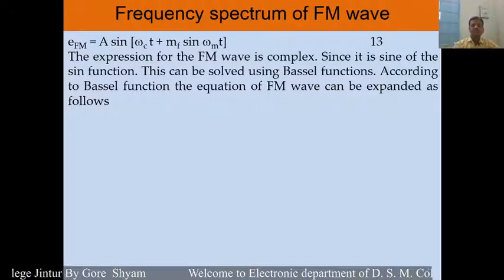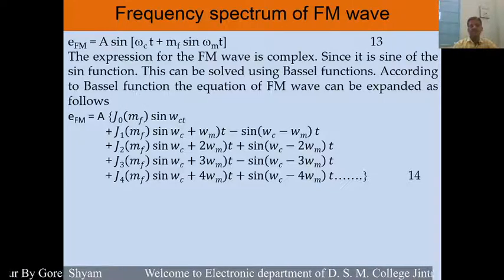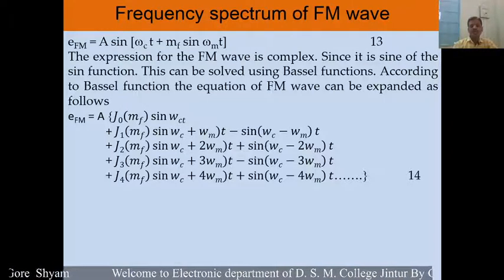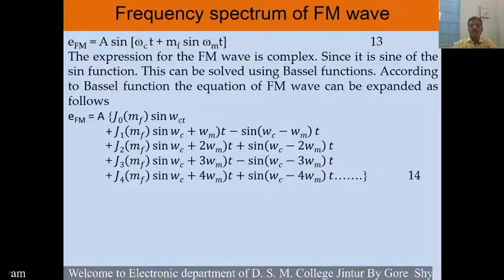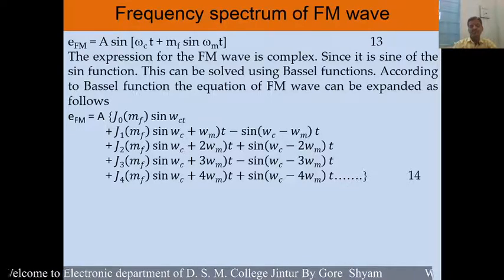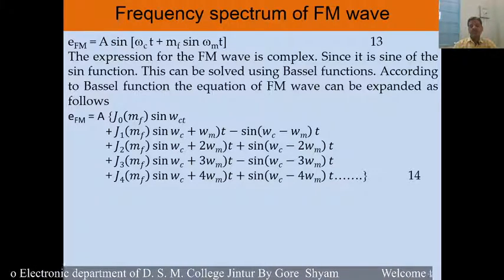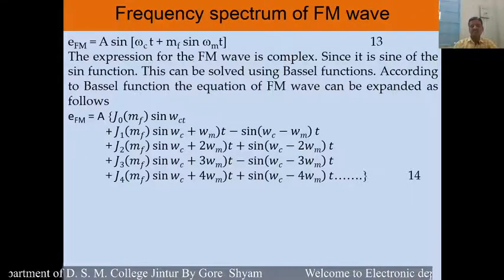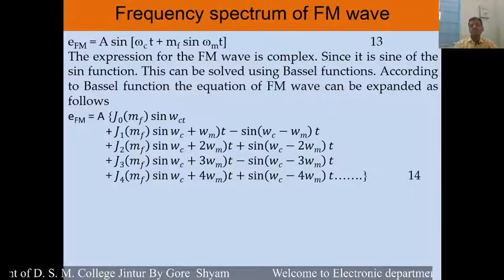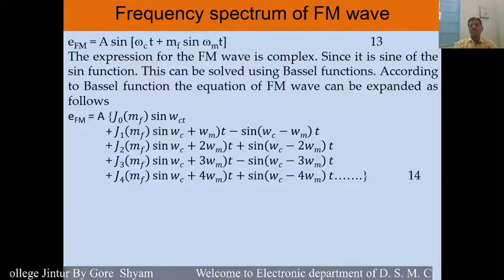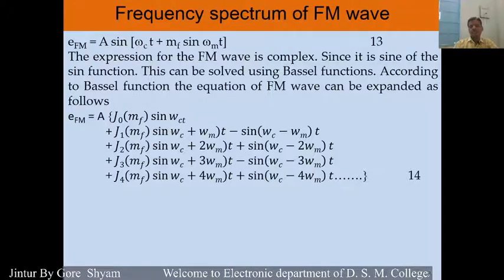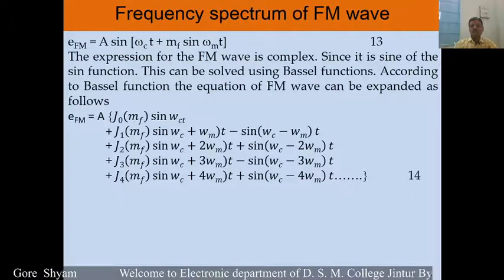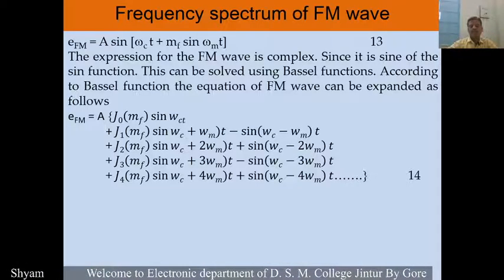When we use the Bessel function, according to it, this equation expands like this: E_FM = A · [ J0(Mf)·sin(ωc·t) + J1(Mf)·(sin((ωc + ωm)·t) − sin((ωc − ωm)·t)) + J2(Mf)·(sin((ωc + 2ωm)·t) − sin((ωc − 2ωm)·t)) + J3(Mf)·sin((ωc + 3ωm)·t) + ... ]